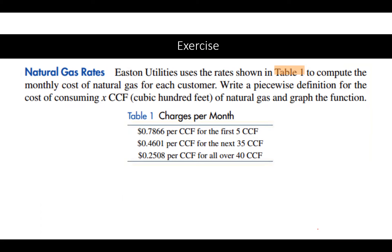Here we see an exercise asking us to write out a segmented linear function — you can see there are three segments. The question asks us to calculate the monthly cost of natural gas, similar to a utility bill. There's tiered pricing for different usage levels, similar to income tax brackets where passing a certain threshold means being taxed at a different rate.